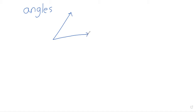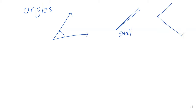We can have two rays meeting, and then we can ask: are these rays close together? Are they far apart? And the answer to that question is given as an angle. So an angle is a measure of how close or how far apart those rays are. Here is a small angle compared to this, which is a bigger angle. The rays are closer on the left; they're further apart on the right.